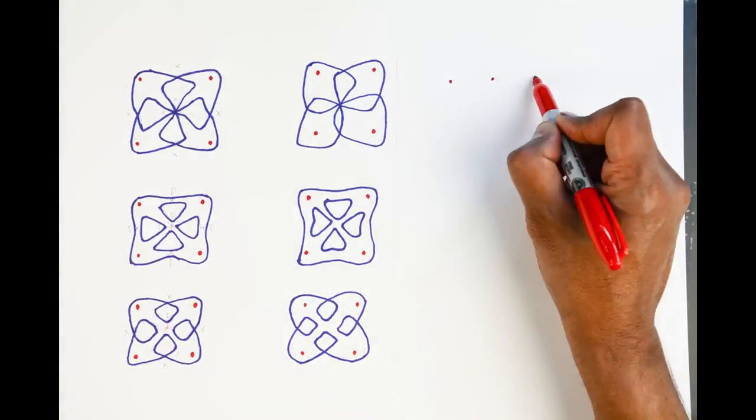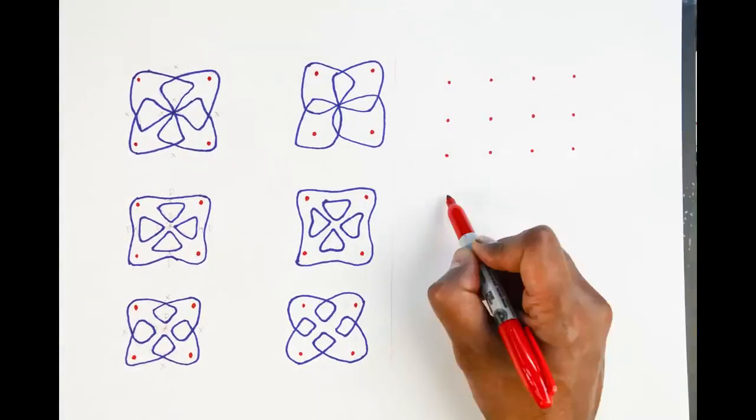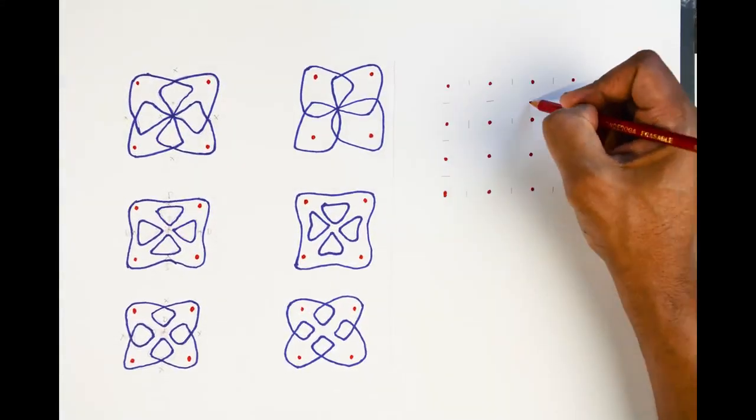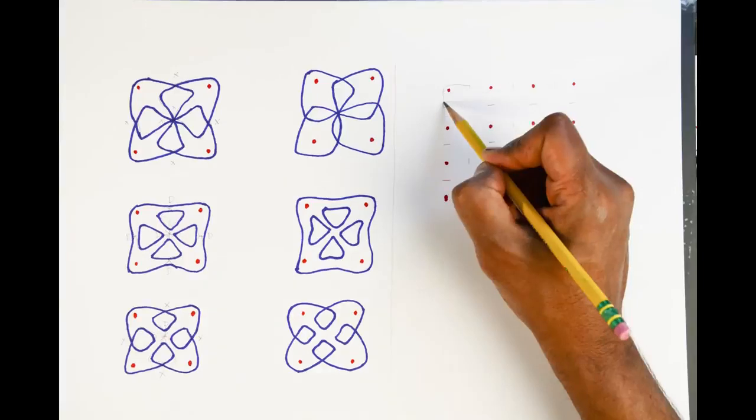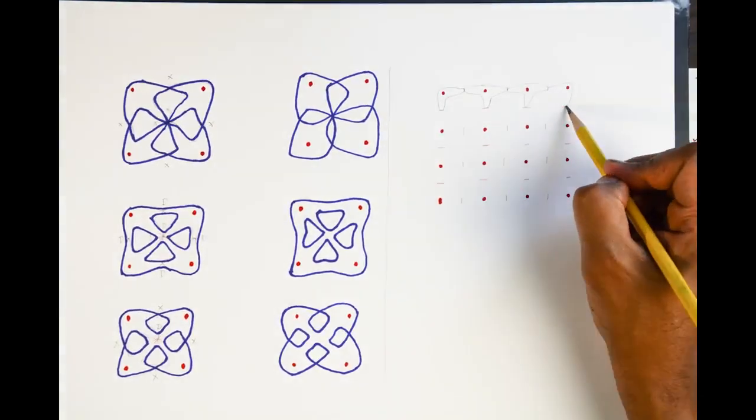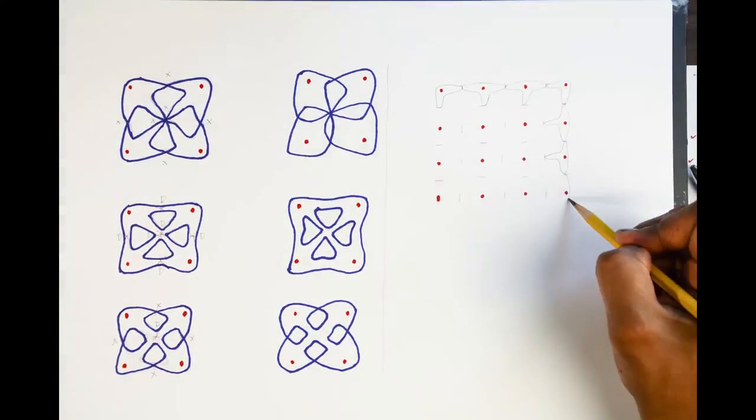All right, now that we are feeling rather confident with this method, let's explore a larger kolam that we saw before, a four by four or 16 dot kolam. Again, place the dots, mark the bisectors, draw the squishies.